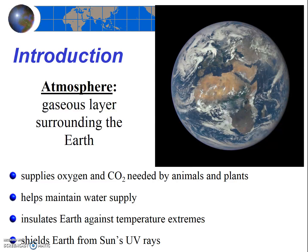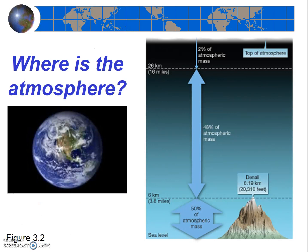Stop and think about how each of those processes works. So where is the Earth's atmosphere? We need to note that the Earth's atmosphere is very thin compared to the thickness of the Earth, and this is apparent when we view the Earth from space — it looks thin and fragile. From figure 3.2 in your textbook, over half of the atmosphere is within only 3.8 miles of the Earth's surface, and over 98% is within 16 miles. Compare that with the Earth's diameter of about 7,900 miles, and you get an idea of how thin our atmosphere really is.